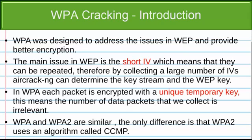When duplicate IVs occur, aircrack-ng can use statistical attacks to determine the key stream and then determine the WEP key. In WPA however, each packet is encrypted using a unique temporary key. This means that the number of data packets collected is irrelevant — even collecting 1 million packets is not useful because they contain no information that can help crack the WPA key.